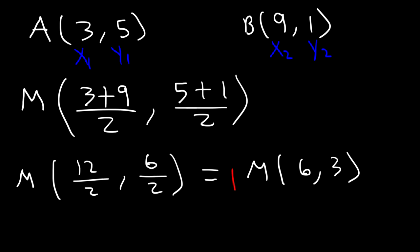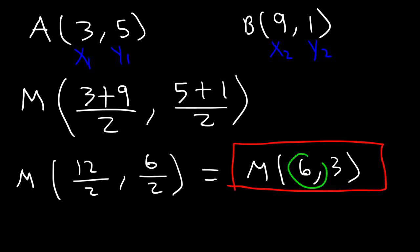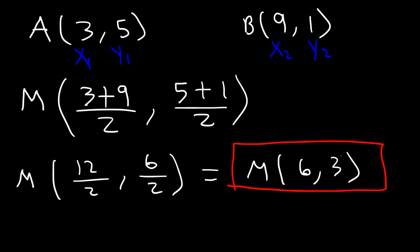So the midpoint between points A and B is (6, 3). As you can see, 6 is right in the middle between 3 and 9 — 6 is the midpoint between 3 and 9. And 3 is the midpoint between 5 and 1; 3 is exactly in the middle of those two numbers.